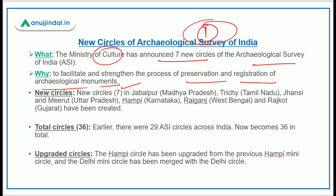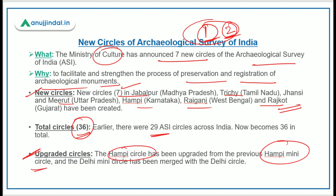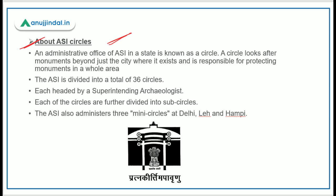ASI has an administrative structure based on circles — regional administrative offices. Below these are mini circles, which are smaller offices under a particular administrative office. Seven new circles have been announced, bringing the total to 36, up from 29. Two mini circles have been upgraded to full-fledged circles. Each circle looks after monuments in a whole area and is headed by a superintending archaeologist, and circles are further divided into sub-circles.